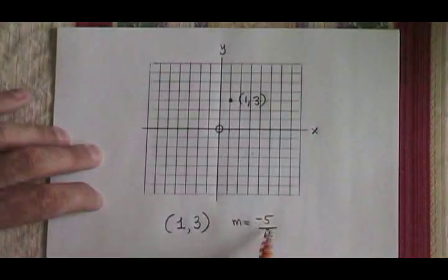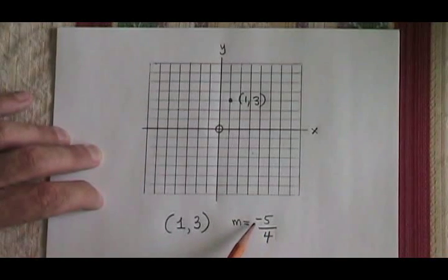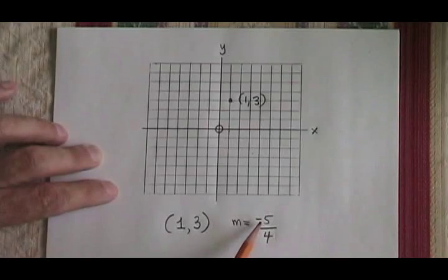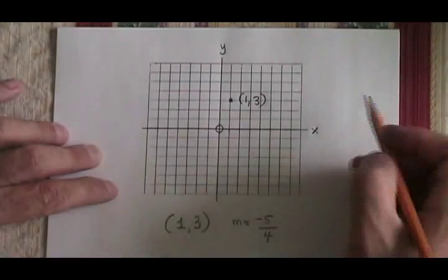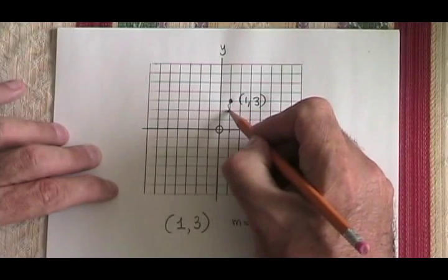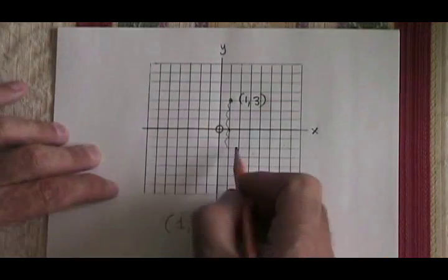My rise this time is negative. When you have a negative fraction, you have to know that the negative sign stays with the numerator. So I have a rise of negative 5. Well, a rise of a negative amount means I am going down, not up. So I go down by 5 spaces. And my run is 4.